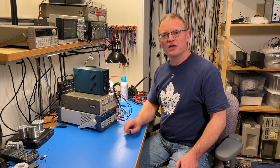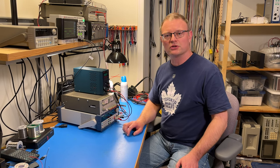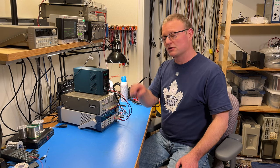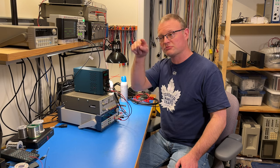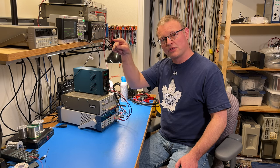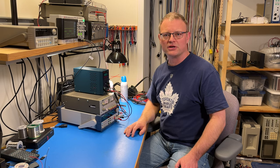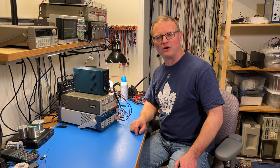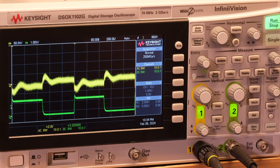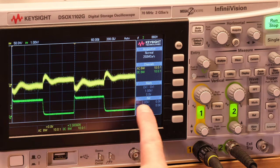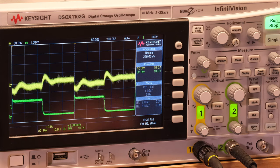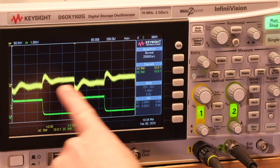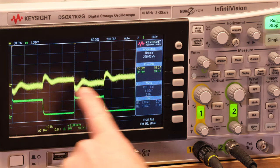So I have this BK Precision 8600B electronic load configured to provide a square wave load function. So it draws zero current for half the cycle, then jumps up to 450 milliamps for the other half of the cycle. And it repeats that pattern at a rate of 1 kilohertz. Let's look at the output voltage of the Henmatech power supply with this kind of a load. Looking at the oscilloscope here, we have the load current indicated on the green trace. And that is actually taken from the current monitor output of the electronic load.